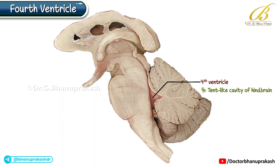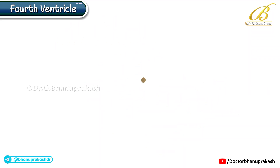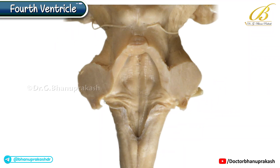It is positioned in front of the pons and medulla, and behind the cerebellum. Here we explore the boundaries of the fourth ventricle.